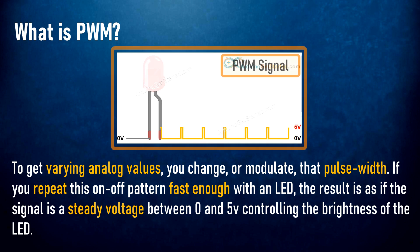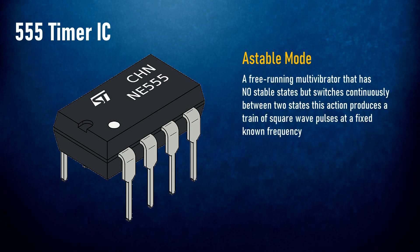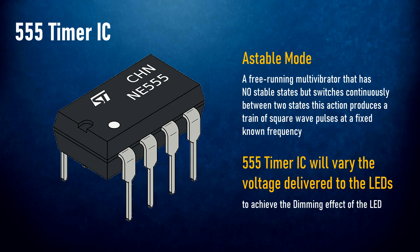To get varying analog values, you change or modulate the pulse width. If you repeat this on-off pattern fast enough with an LED, the result is as if the signal is a steady voltage between 0 and 5 volts controlling the brightness of the LED. In this setup, we are going to use the 555 timer IC in astable mode to generate the PWM signals. 555 timer IC will vary the voltage delivered to the LEDs to achieve the dimming effect of the LEDs.